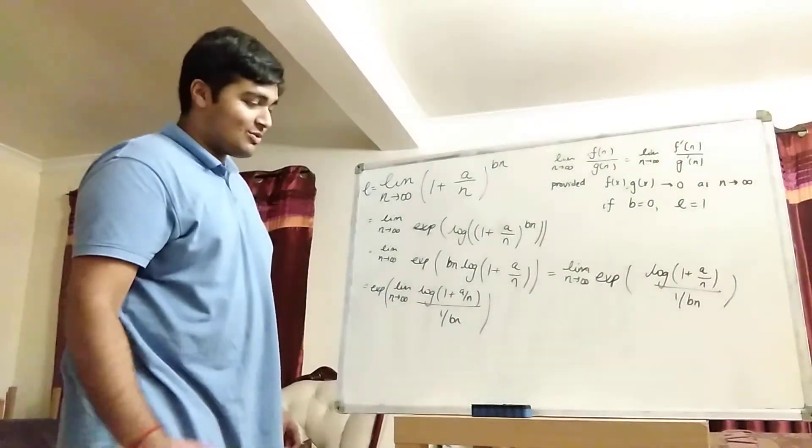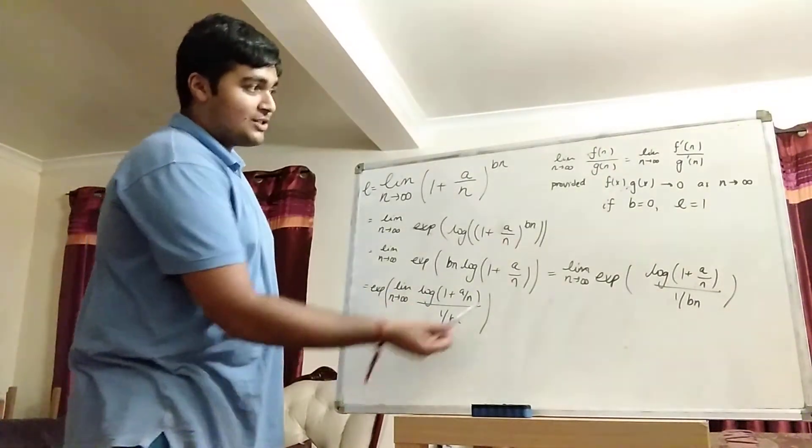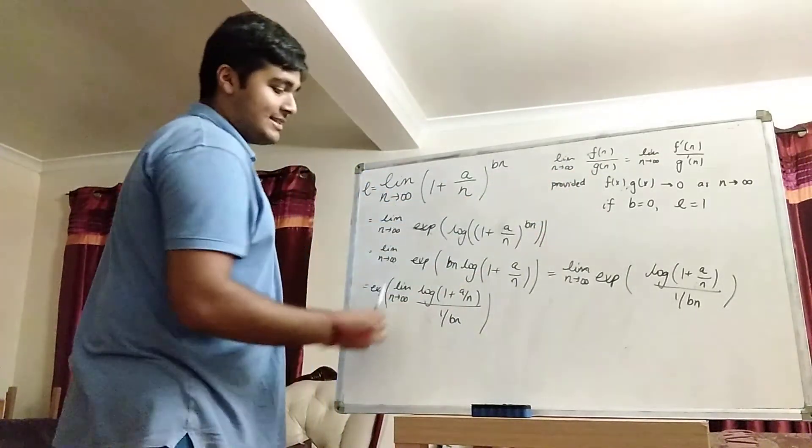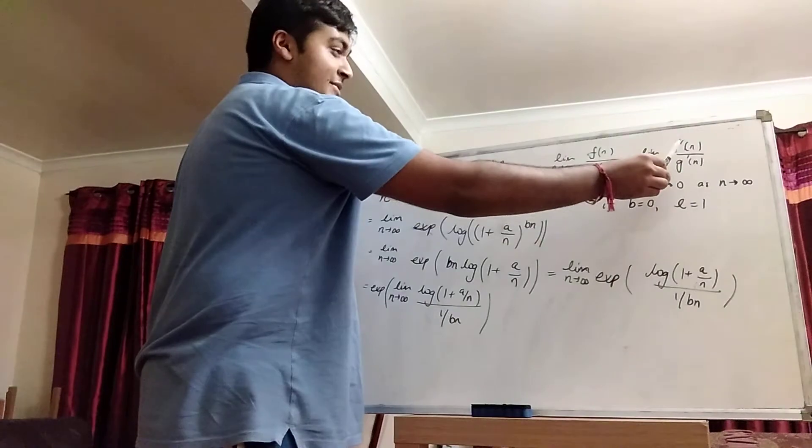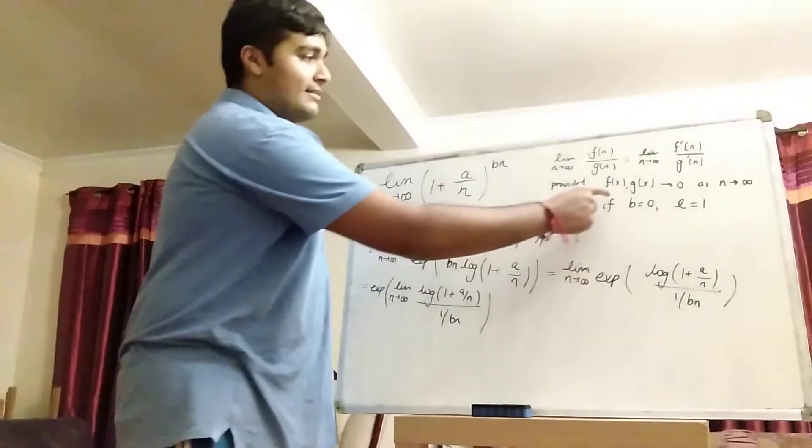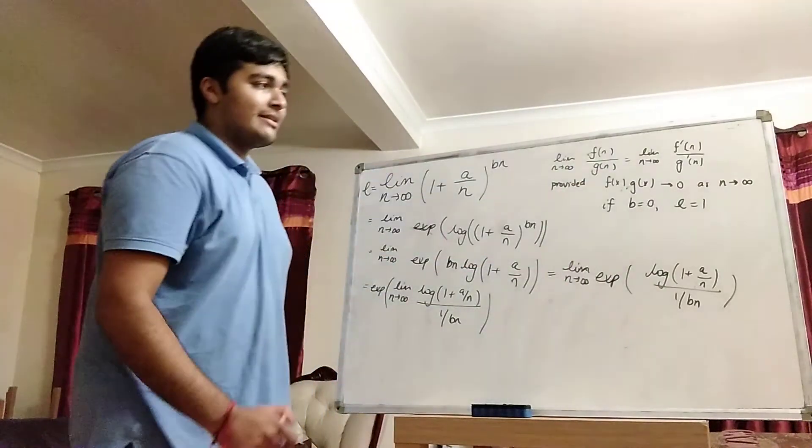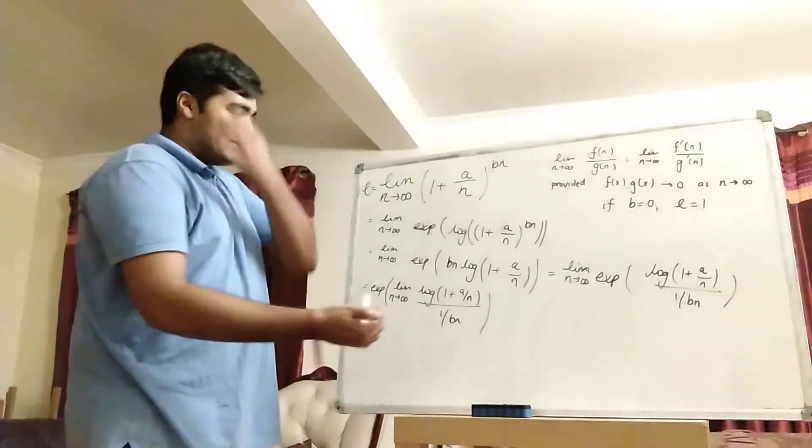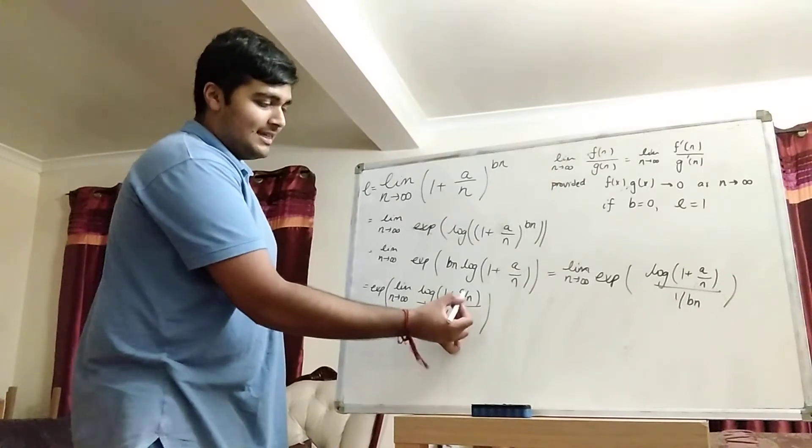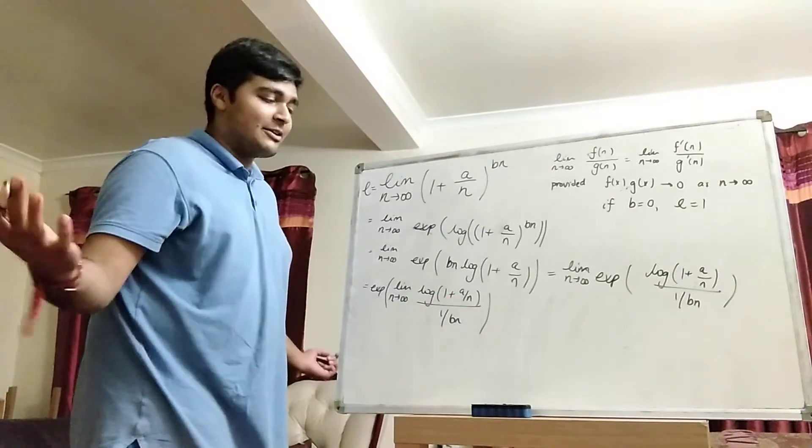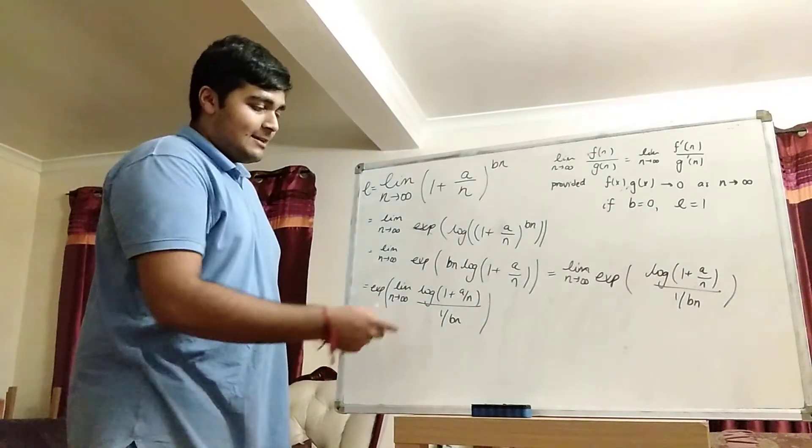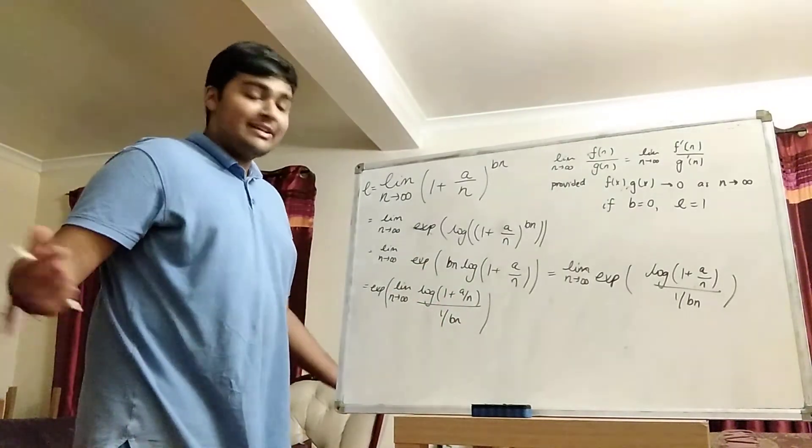And now here's where we use L'Hopital's rule. We've got two functions in this form, f of n and g of n. And by L'Hopital's rule, the limit as n goes to infinity is the derivative of the top divided by the derivative of the bottom. And that's provided that f of x and g of x go to 0 as n goes to infinity. So let's just check that. When we take n to infinity in here, we get 1 plus a over n. But as n gets bigger and bigger, this thing here goes to 0. So we've got log of 1 plus 0. And that's log of 1, which is 0.